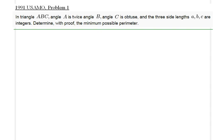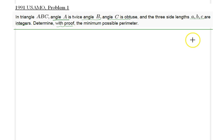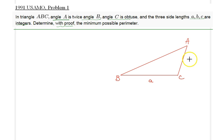Hello everyone. In this lecture we will be studying 1991 USAMO problem number one. We are given a triangle ABC where angle A is twice the size of angle B, angle C is an obtuse angle, and the three side lengths A, B, C are all positive integers. We need to determine with a proof the minimum possible perimeter. Let's go ahead and draw a sketch — this is side length A, B, and C.